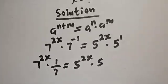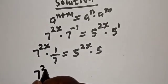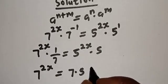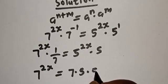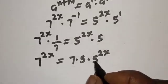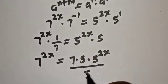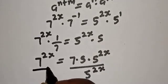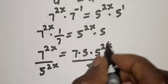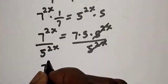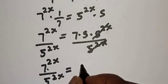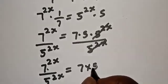If you cross multiply, we have 7 raised to power 2s is equal to 7 multiplied by 5, then multiplied by 5 raised to power 2s. Now let's divide both sides by 5 raised to power 2s. This will cancel, giving us 7 raised to power 2s over 5 raised to power 2s, equal to 7 times 5.